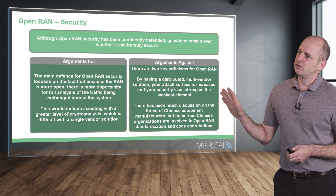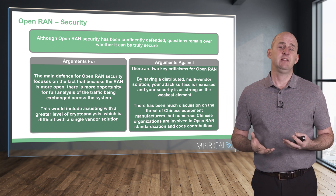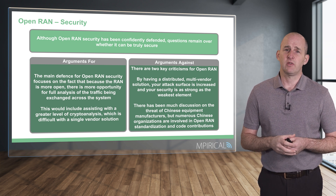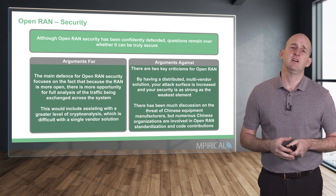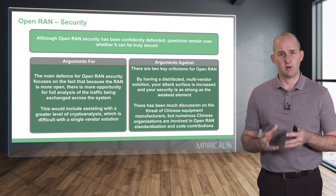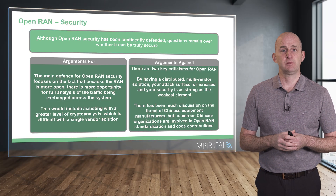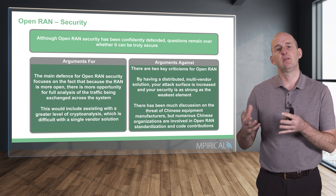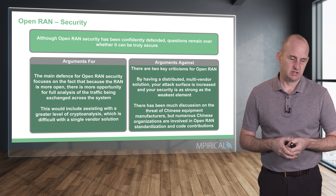The other security area worth discussing is Chinese equipment manufacturers. Governments around the world have been forcing service providers to remove Chinese equipment vendors from their networks, but it's worth noting that in terms of contributing bodies to Open RAN there is a lot of Chinese influence — Chinese vendors have a say in the O-RAN Alliance standards, and a lot of code is being developed by Chinese manufacturers — which in and of itself is perhaps a security consideration.